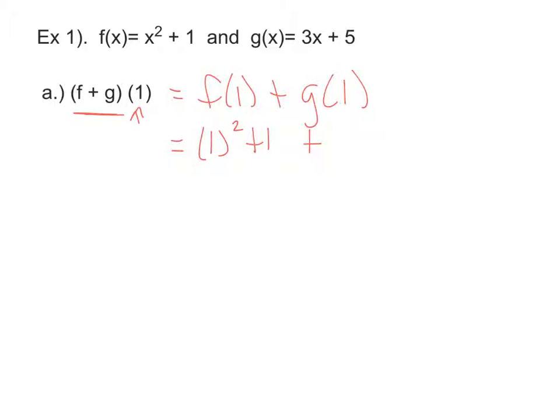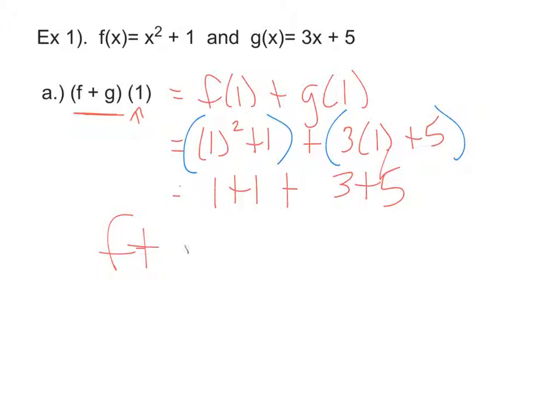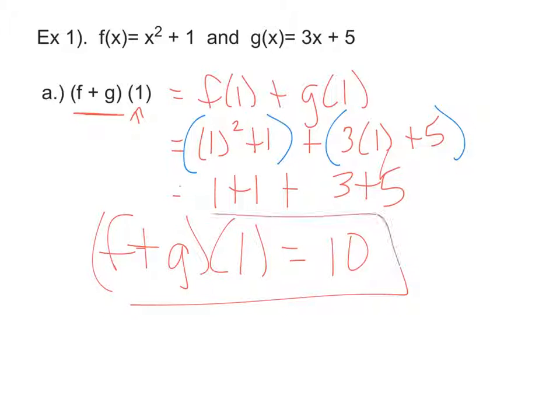Plus, if you do your G of X function, that's 3 times 1 plus 5. So keep in mind, this first part is your F of X function. The second part is your G of X function. So they're just numbers, so do your work. One squared is 1 plus 1 plus 3 plus 5. So your F plus G of 1 is now equal to 10.